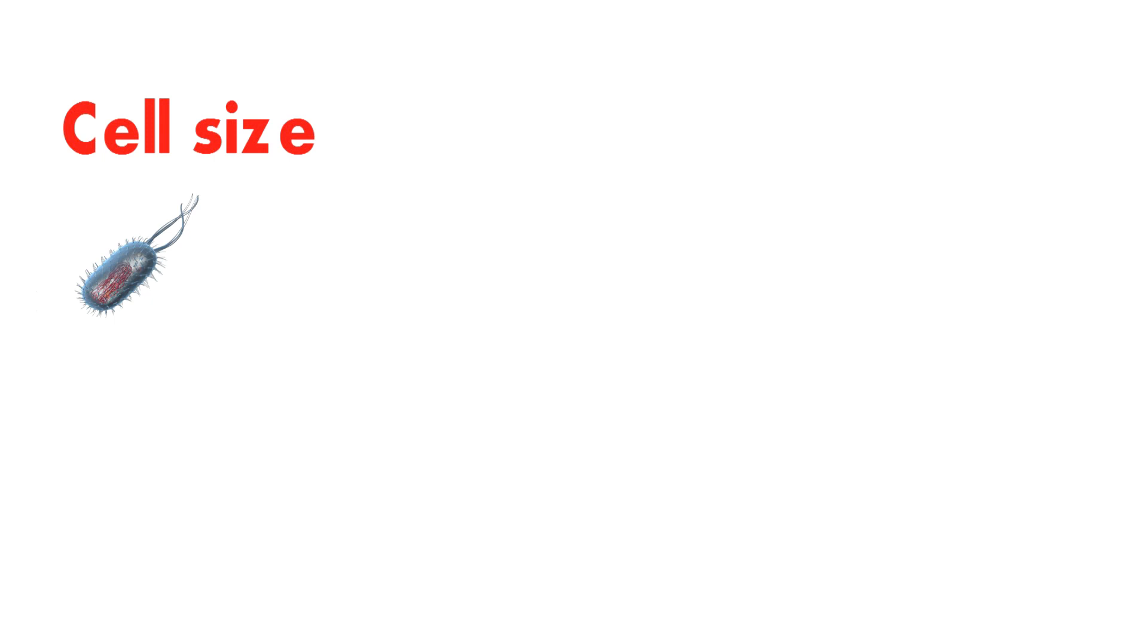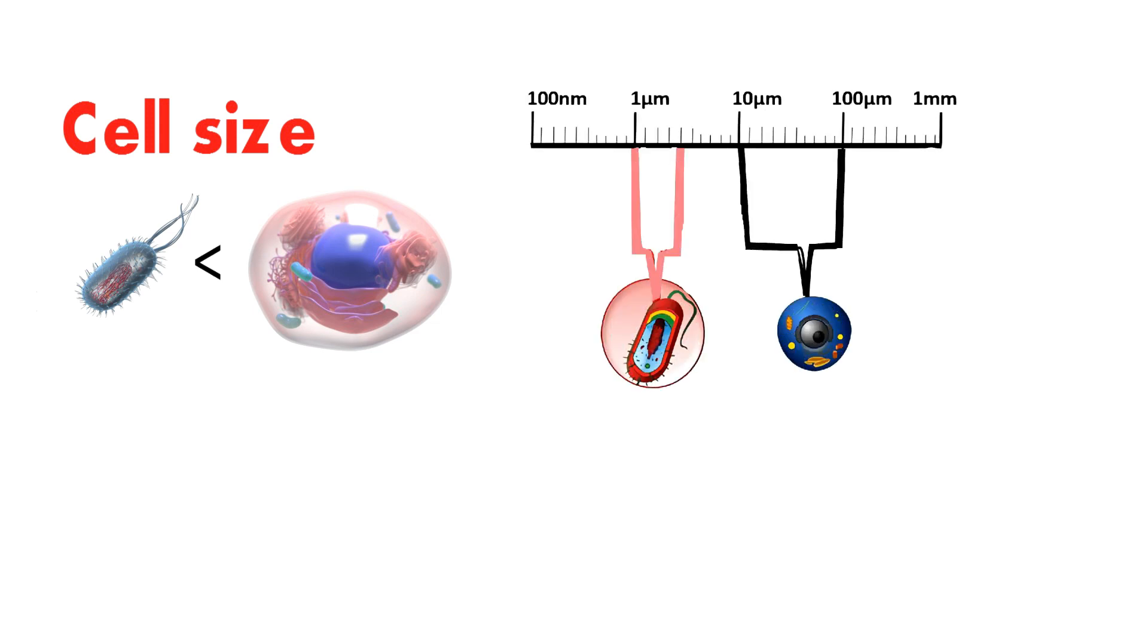Prokaryotic cells are generally much smaller than eukaryotic cells. Prokaryotic cells typically range in size from 0.1 to 5 micrometers, while eukaryotic cells typically range in size from 10 to 100 micrometers.